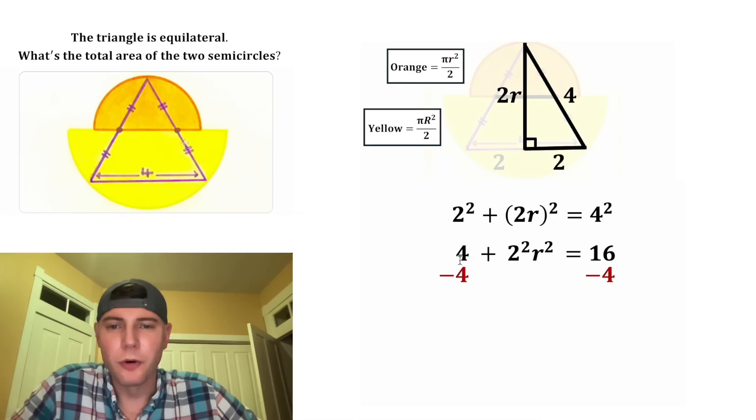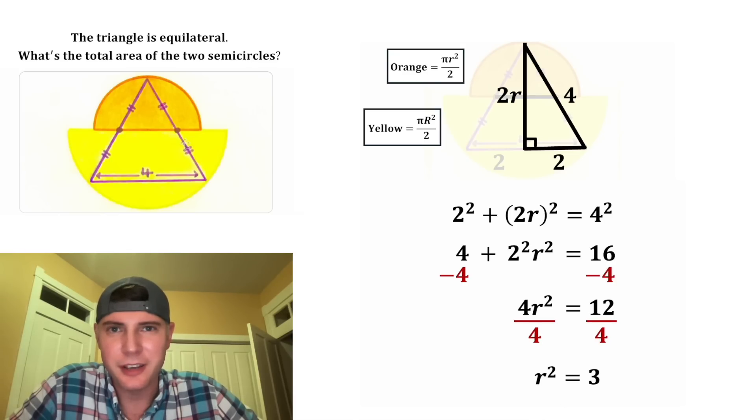Four squared is 16. Subtract 4 from both sides. Four minus four goes away. Two squared is 4, and we bring down the r². 16 minus 4 is 12. Divide both sides by 4, and we get r² = 3. Square root both sides, and we get r = √3.